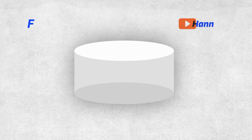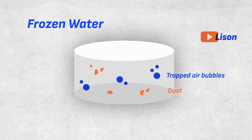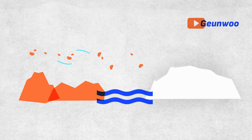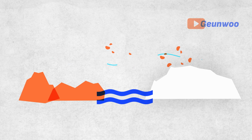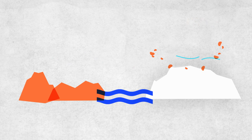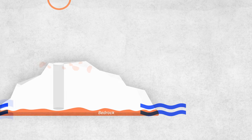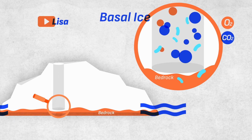As the ice forms, bubbles of air get trapped inside. These bubbles of ancient air capture how the Earth's atmosphere has changed over time. We also find dust. This can be soil blown from other continents or ash from an erupting volcano landing on the surface snow, which became trapped in the ice.